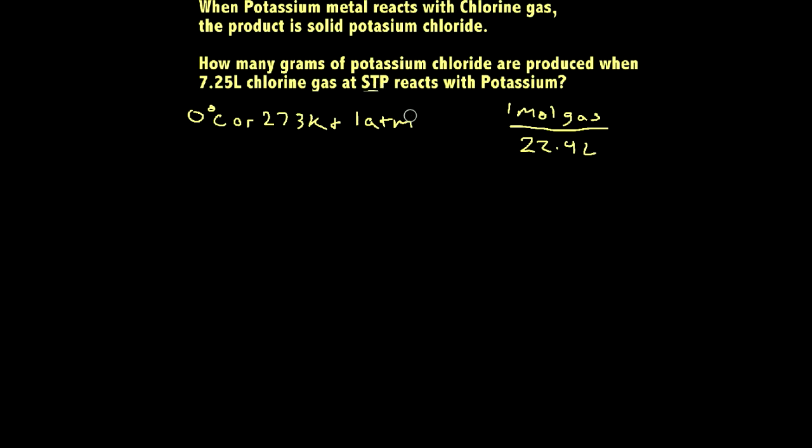So let's do a problem here with this. It says when potassium metal reacts with chlorine gas, the product is solid potassium chloride. How many grams of potassium chloride are produced when 7.25 liters of chlorine gas at standard temperature and pressure reacts with potassium?